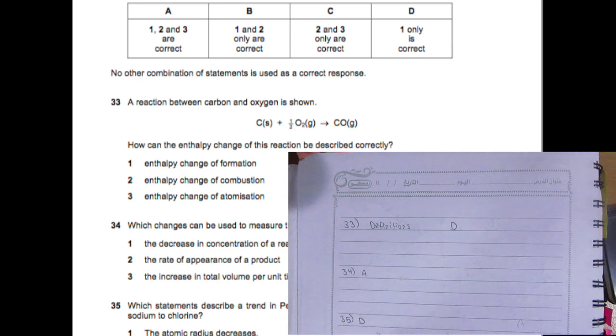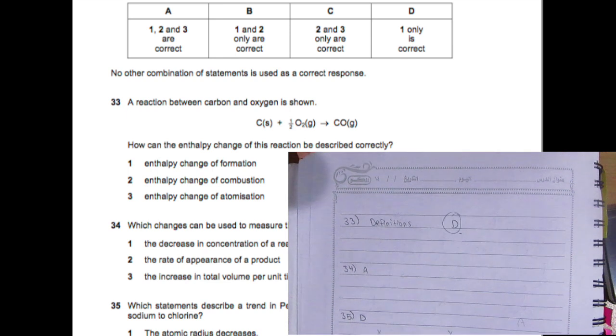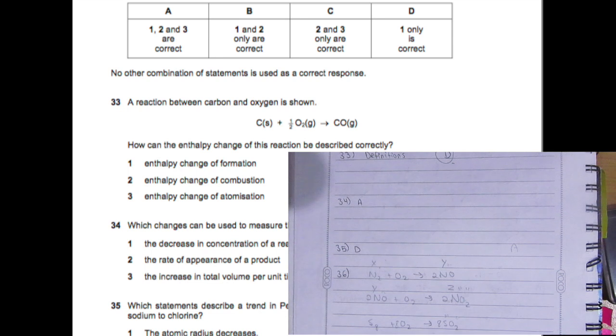Enthalpy change of atomization is the enthalpy change when one mole of gaseous atoms is formed from its element under standard conditions. You can see we're not forming one mole of a gaseous atom from its element, so options two and three are gone. D is your answer.